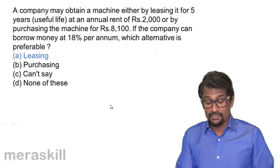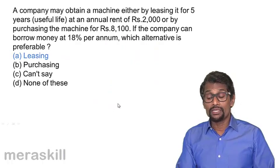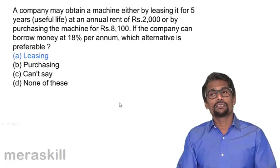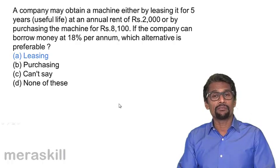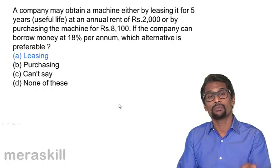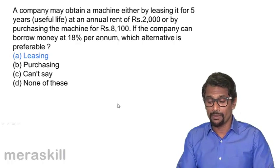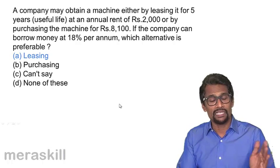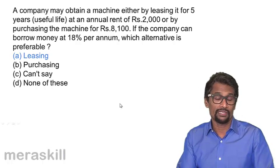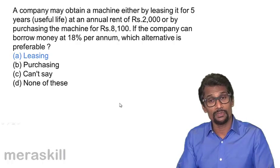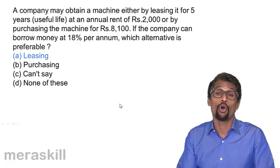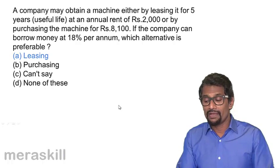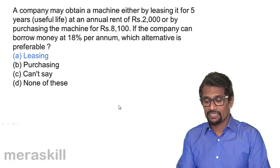All these examples show how a buying decision can be affected by calculating the present value as compared to what it would be in the future, and then deciding whether the investment is worth it or not — whether it's better to purchase the machine, not purchase the machine, or take the alternative of leasing. That's what we have in the buying decision.